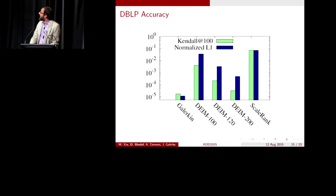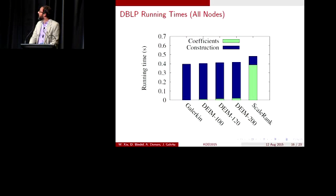Scale rank does much worse notice. It's on the order of 10 to the minus 1. For the DEIM method, we preferred DEIM 200, which has a Kendall tau of order 10 to the minus fourth. If you're interested in the actual values, the normalized L1 is the L1 error associated with the top 100 nodes divided by the L1 norm of the piece of the page rank vector associated with the top 100 nodes. The running times are pretty good. This is for computing the entire page rank vector. Notice that most of the time is in that blue part where you're actually forming the vector. The calculation time to get the coefficients is very small. It's down there at the very bottom.